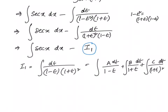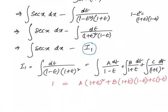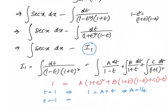Now let us find the values of a, b, and c. We write 1 equal to a into 1 plus t whole squared plus b into 1 plus t into 1 minus t plus c into 1 minus t. Substituting t equal to 1, the b and c terms cancel, and we get 1 equal to a into 4, so a equal to 1 by 4. Substituting t equal to minus 1, the a and b terms cancel, and we get 1 equal to c into 2, so c equal to 1 by 2.